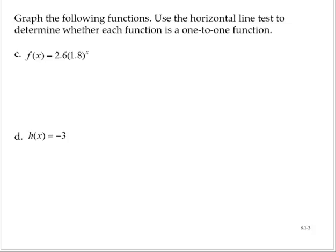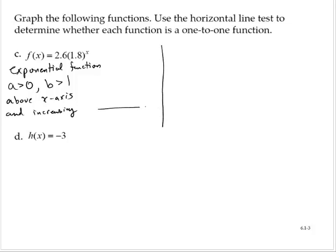Let's consider example C, where we're given f of x is equal to 2.6 by 1.8 to the x. This is an exponential function. And since a is positive and b is greater than 1, it is above the x-axis and increasing. So a rough sketch would give you something like this.